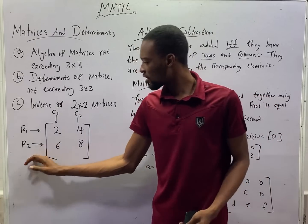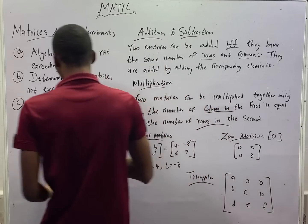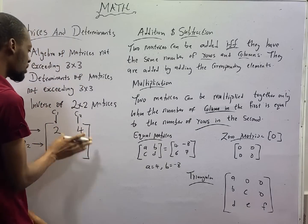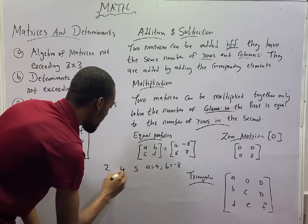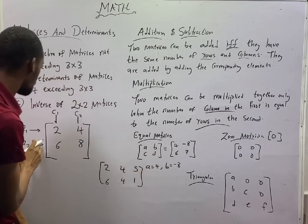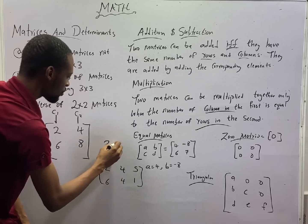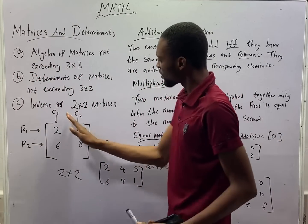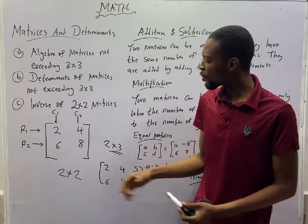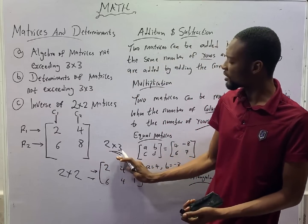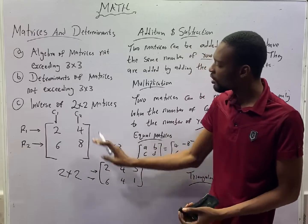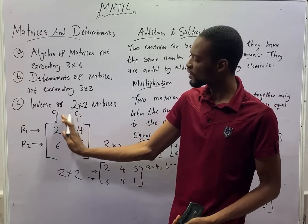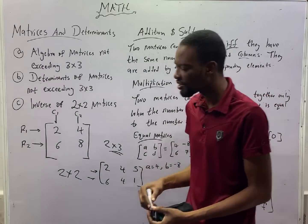If the first matrix has two columns and the second matrix [2,4; 5,6; 4,1] has two rows, the number of columns in the first equals the number of rows in the second, so they can be multiplied. Even if the number of columns differs otherwise, provided the columns of the first equal the rows of the second, these matrices can be multiplied.